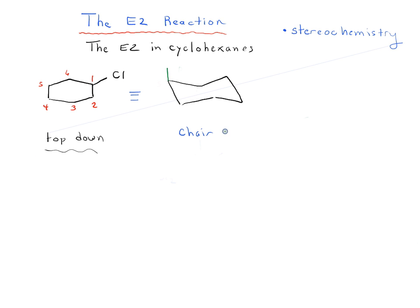Starting with the headrest, we put an axial group up; footrest, an axial group down. We alternate up, down, up, down like that. For equatorial groups, we alternate somewhat up and somewhat down to make it look tetrahedral. We can arbitrarily number one of these carbons — let's say this is carbon one — and since the numbering goes clockwise, we number around clockwise: one, two, three, four, five, six.